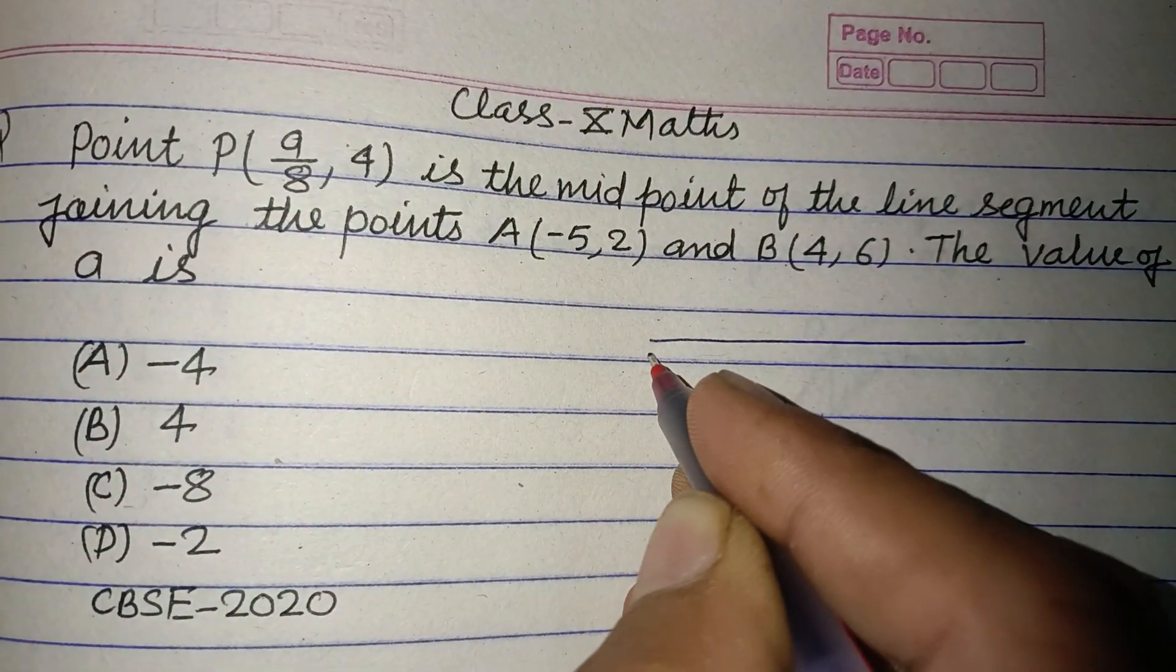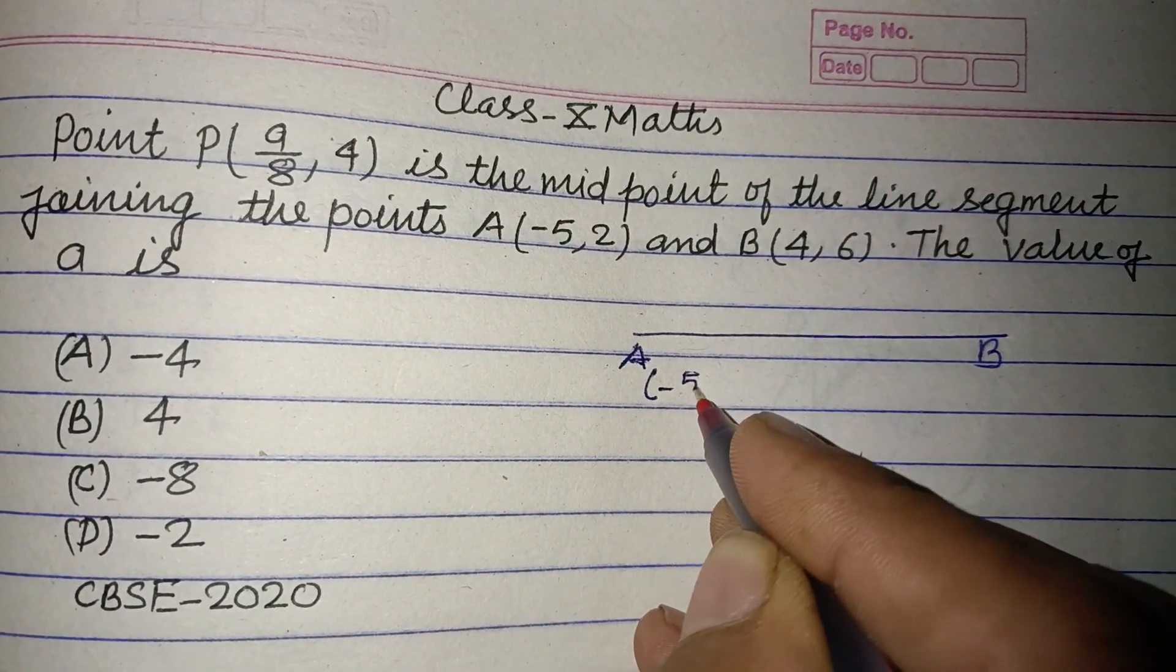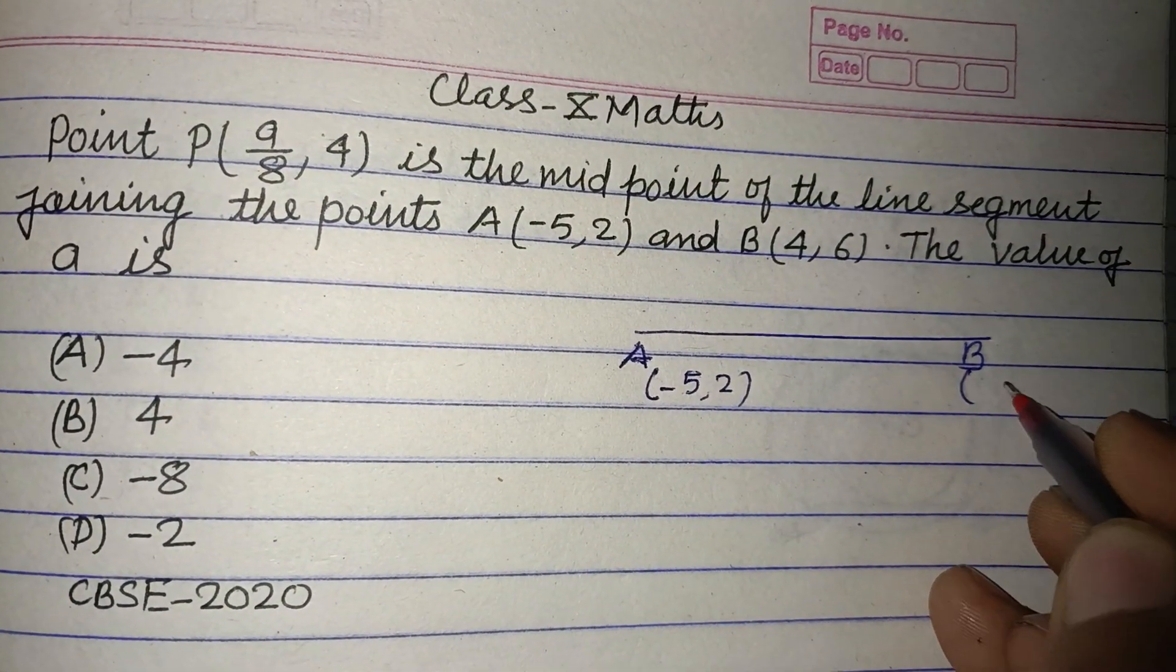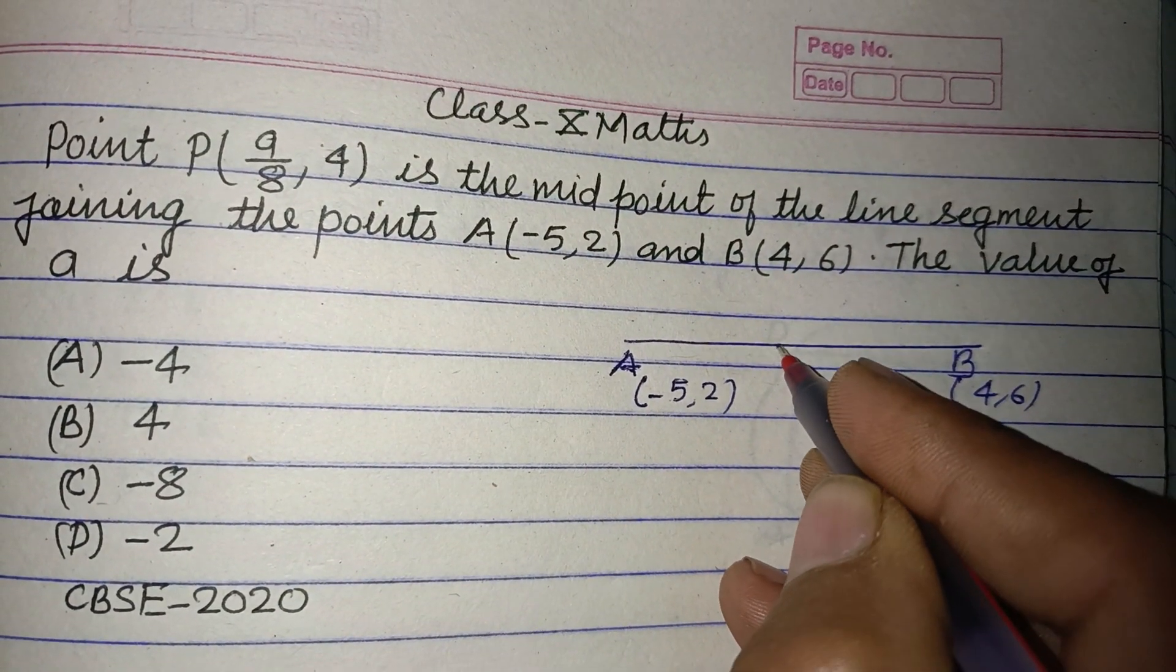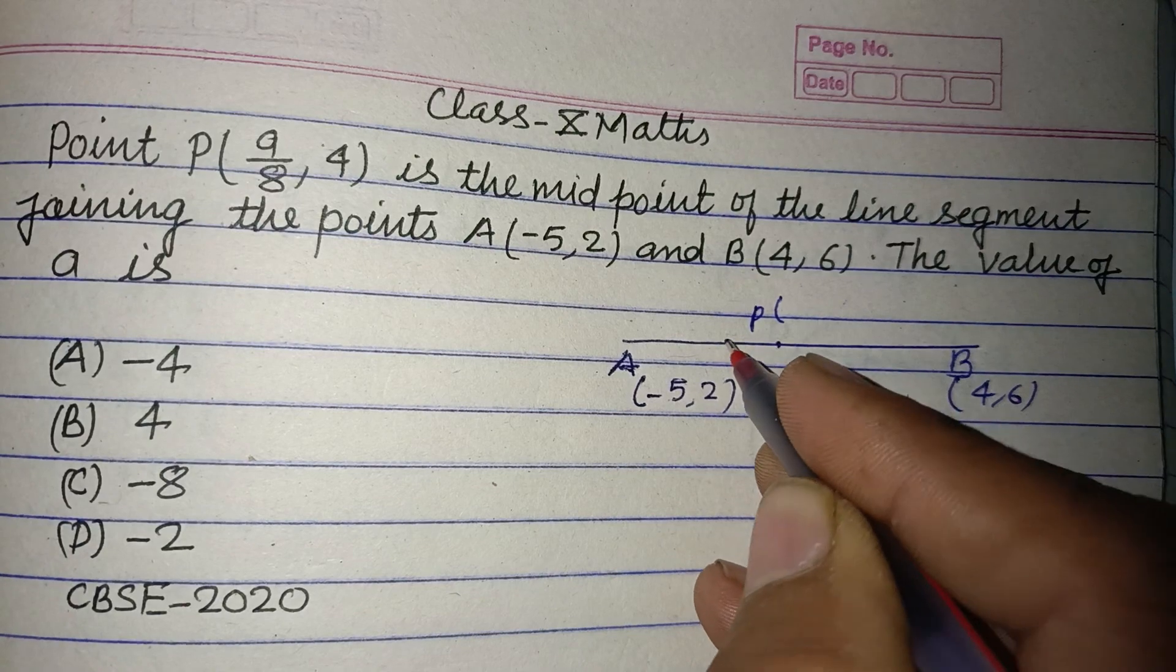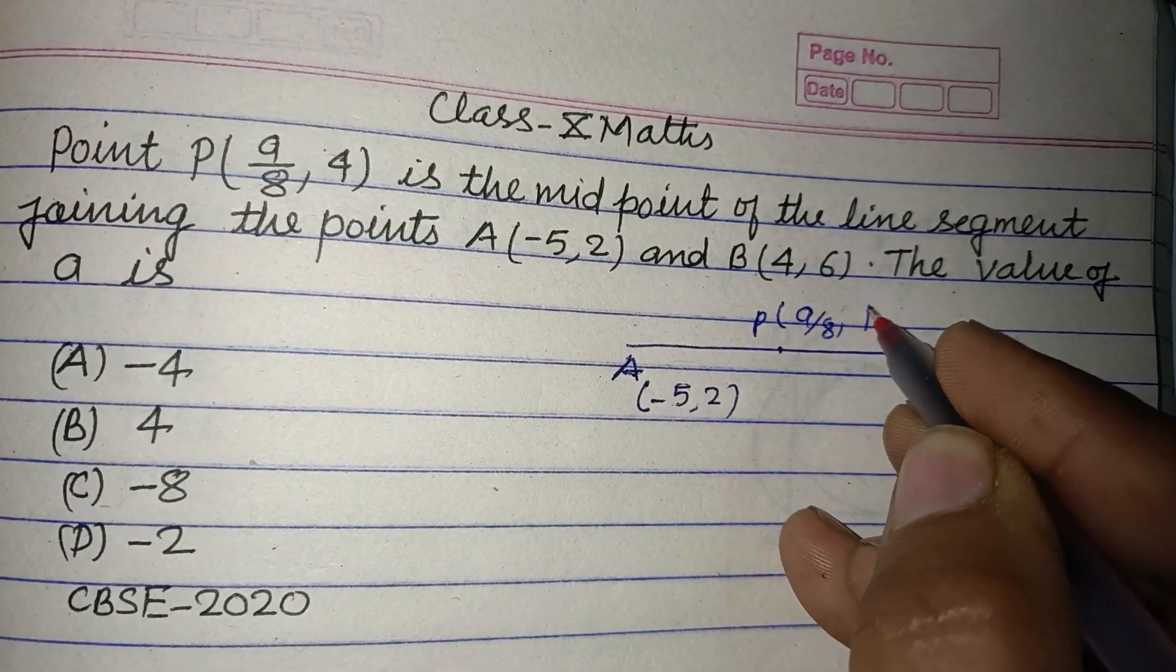So students, here are two points A and B whose coordinates are given: -5, 2 and 4, 6. Point P is the midpoint which is a/8, 4.